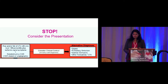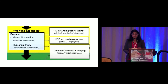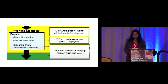Once we've considered those factors, this is essentially a diagnosis of exclusion. Did we miss any obstruction — was there small branch vessel disease not visualized? We review the angiogram findings, assess LV function via echocardiogram or LV-gram on coronary angiogram, and obtain contrast cardiac MRI with gadolinium, which helps identify scar myocardium.